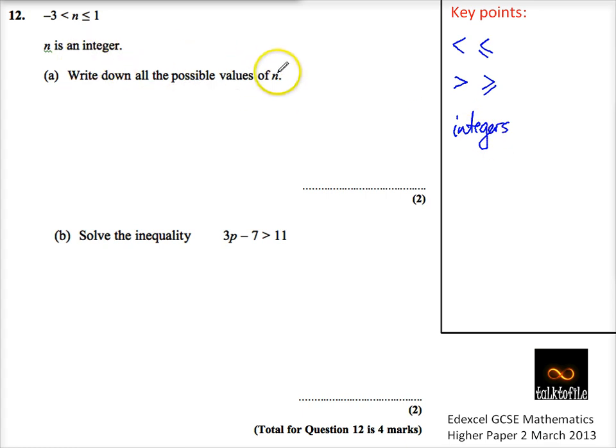So write down all the possible values of n. Well, it has to be a whole number, so it's not allowed to be minus 3, it doesn't have that extra little line. So it could be minus 2, it could be minus 1, it could be 0, and it's allowed to be 1 because it's less than or equal to 1. So less than or equal to, correct that, 1, okay?